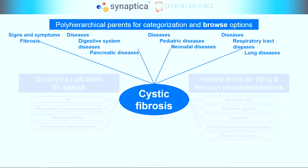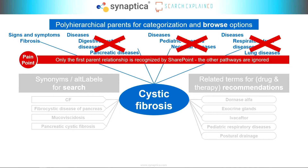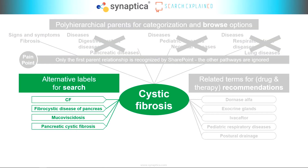Let's start with hierarchy. This isn't in one hierarchical pathway — it's in four. People have different angles and ways of accessing information. It could be signs and symptoms, the digestive system, or a pediatric approach. What happens when this goes into SharePoint is this first pain point: only the first parent relationship pathway is going to be recognized. Everything else is going to be ignored. All those other access points are simply ignored. Major pain point.